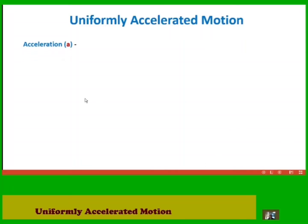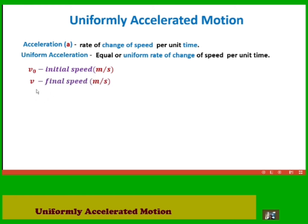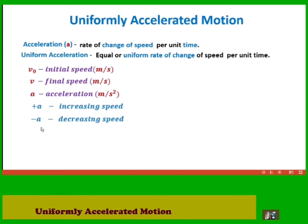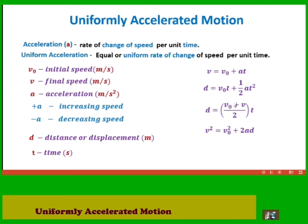This video tutorial is about uniformly accelerated motion. We define acceleration as the rate of change of speed per unit time. Uniform acceleration is an equal or uniform rate of change of speed per unit time. We have the symbol for initial speed v₀ in meters per second, final speed v in meters per second, acceleration a in meters per second squared, distance or displacement d in meters, and time t in seconds. These are the equations we will use when solving problems involving uniformly accelerated motion.